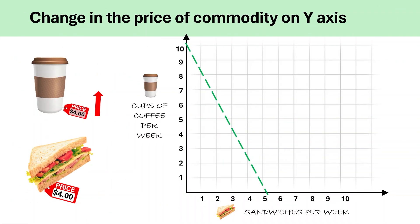Now, let's consider another scenario. Imagine the price of coffee rises from $2 to $4. What will happen in that case? When the price of coffee increases, the consumer can afford now fewer cups of coffee with the same budget. This will cause the budget line to rotate inward like this.